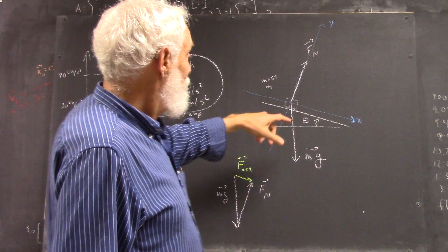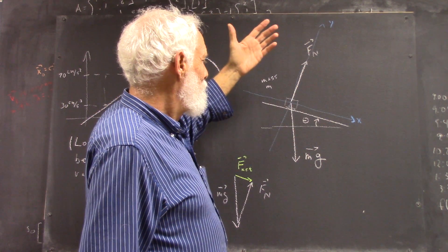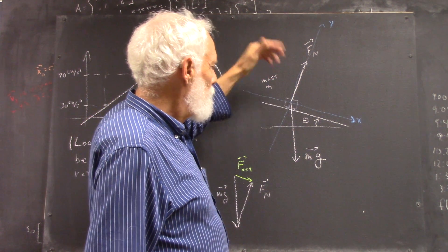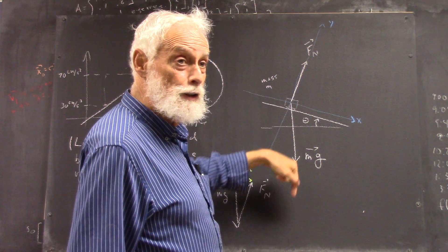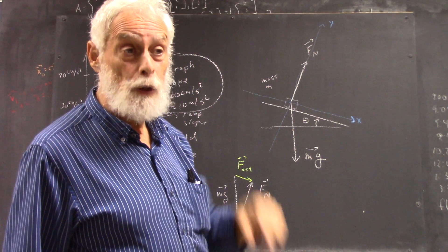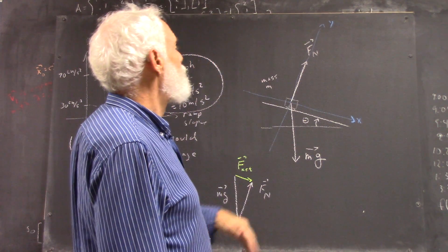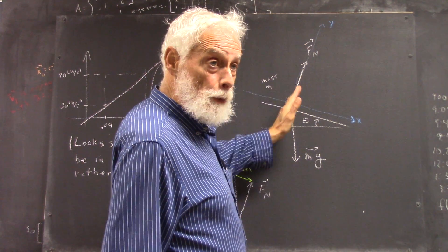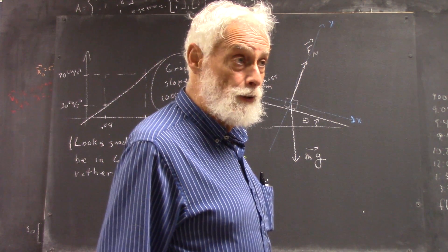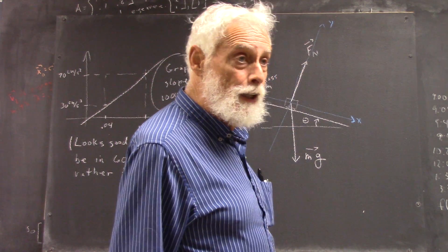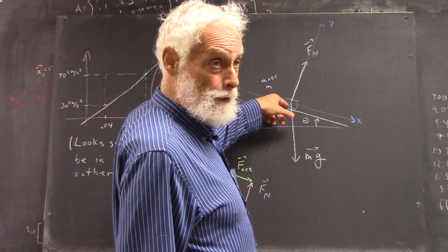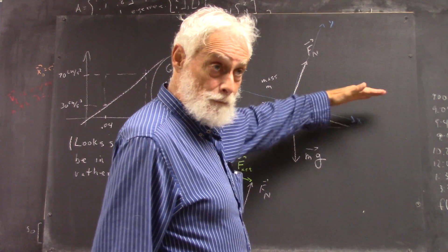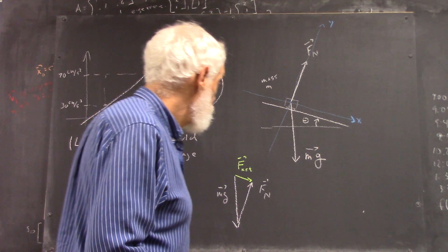Now, this coordinate system works better than one where x is horizontal and y is vertical. Because, in that case, the only thing that's parallel to an axis is the mg. Whereas here, the net force is going to turn out to be parallel to the x-axis, normal force parallel to this axis. And for that and a lot of other reasons, the analysis is very simple here and much more complicated if you have the horizontal x-axis.